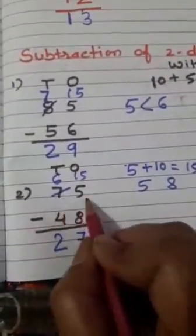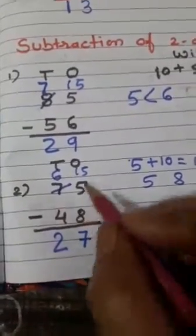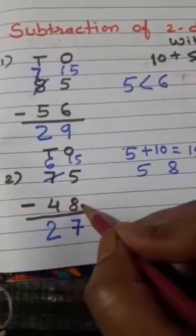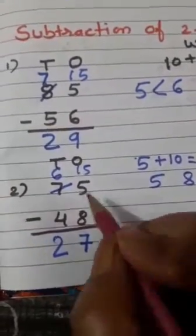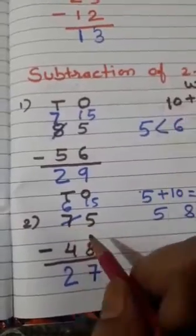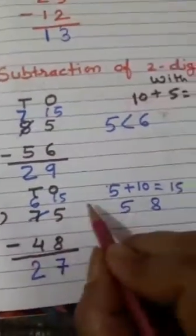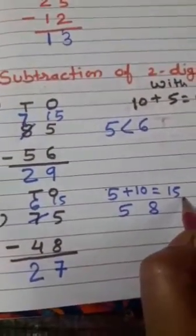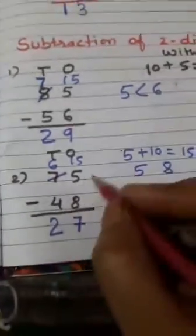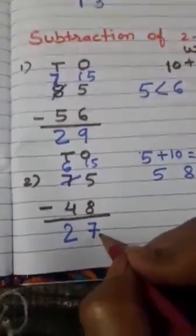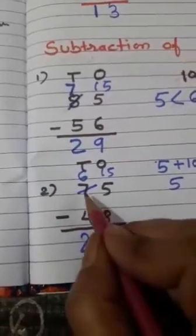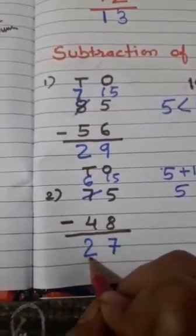Next example: 75 minus 48. Again, you have to subtract 1s with 1s and 10s with 10s. In 1s place there is 5 and 8. We will not subtract 8 from 5. Kya hum 8 ko 5 me se subtract kar sakte hain? No. So again we will borrow 1 ten from 10s place. Agar aap 5 ko 10 se add karo to it becomes 15, and 7 me se humne 1 ten ko minus kiya to it becomes 6. So 15 minus 8 equal to 7, and 6 minus 4 equal to 2. What is our answer? 75 minus 48 equal to 27.